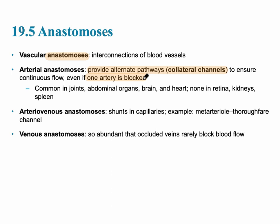Anastomoses are already present in many locations including joints, abdominal organs, the brain, the gastrointestinal tract, and the palms. Specific types include the arteriovenous anastomosis, which connects the arterial system to the venous system, and venous anastomoses, which become important when venous blood flow is blocked.